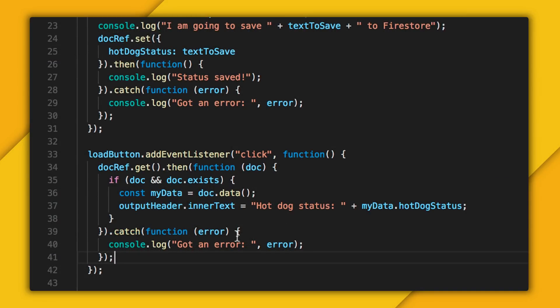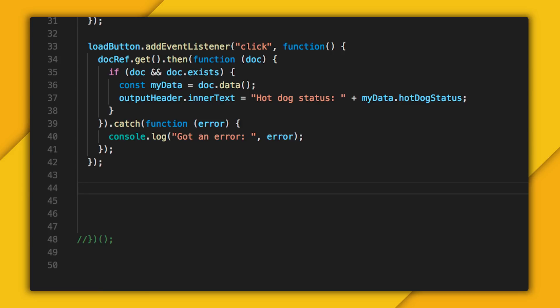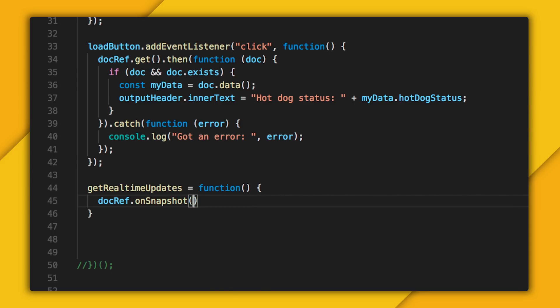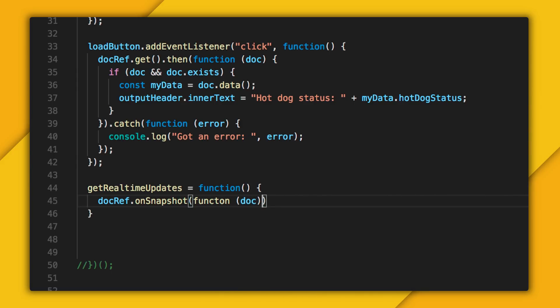Basically, the process is going to work nearly the same. Let's create a function called get real time updates. And in there, I'm going to bring up my doc ref. But then instead of calling get, I'm going to use the on snapshot event listener. This will fire the first time I call it. But then it will also fire any time thereafter when my data changes.